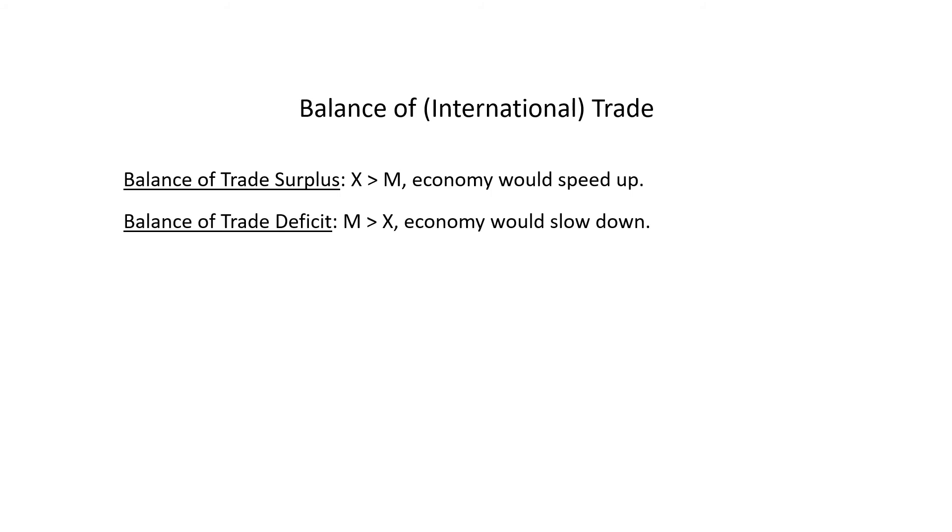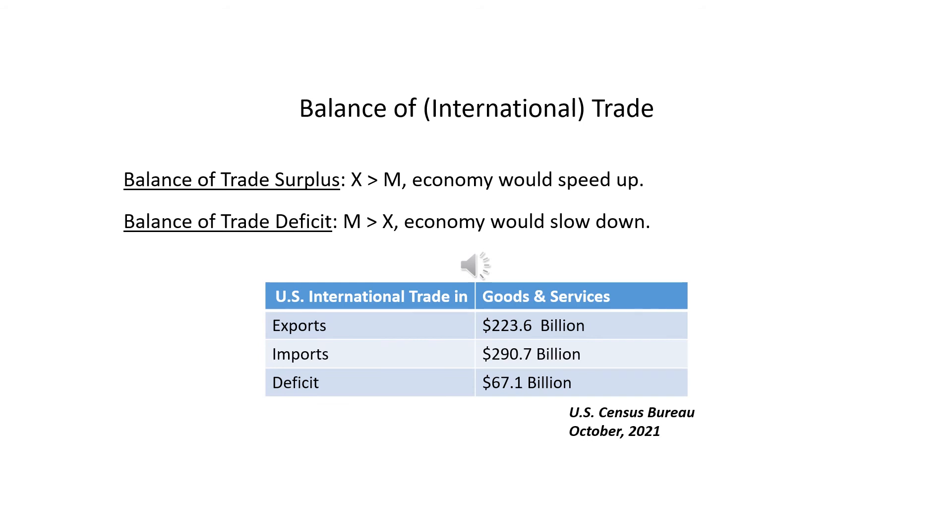A balance of trade deficit, on the other hand, would mean that there was a net leakage of spending from the economy because the purchases of imports exceeded the purchases of exports. This would cause the economy to slow down. As of October, the U.S. balance of trade for 2021 has a deficit of $67.1 billion. In fact, the U.S. economy usually does run a balance of trade deficit. The last balance of trade surplus was in 1975.